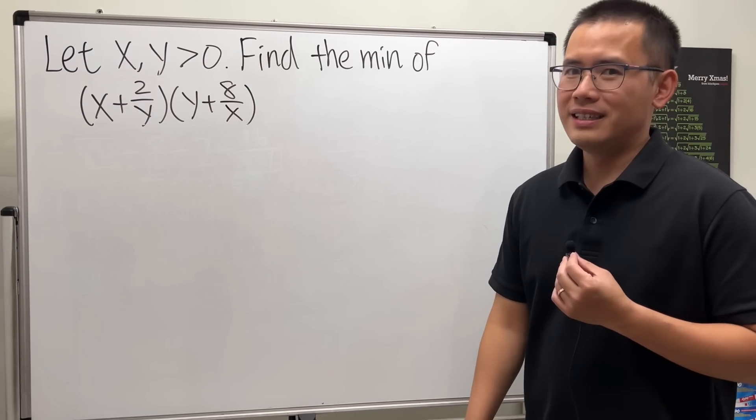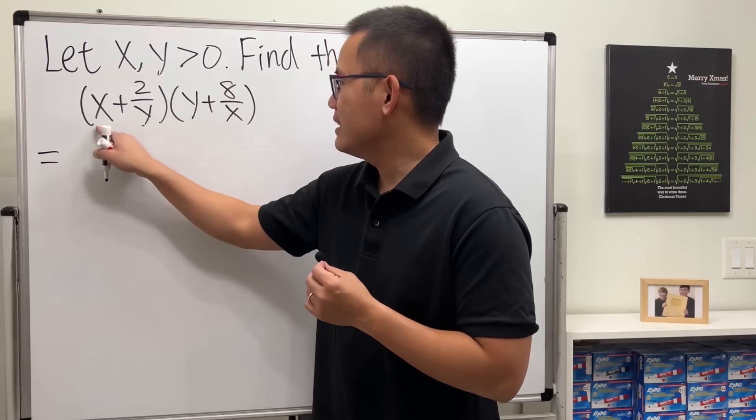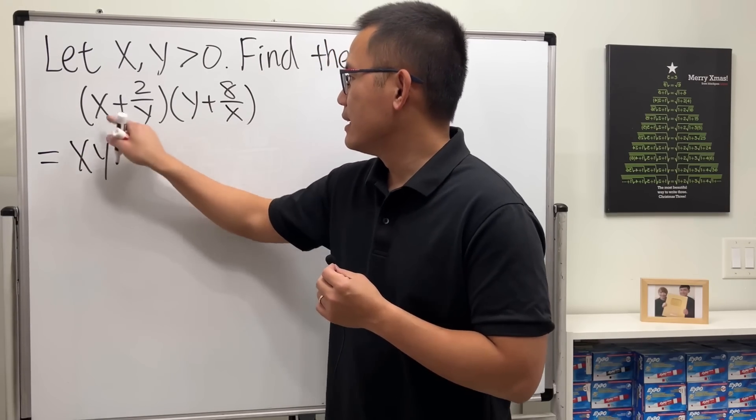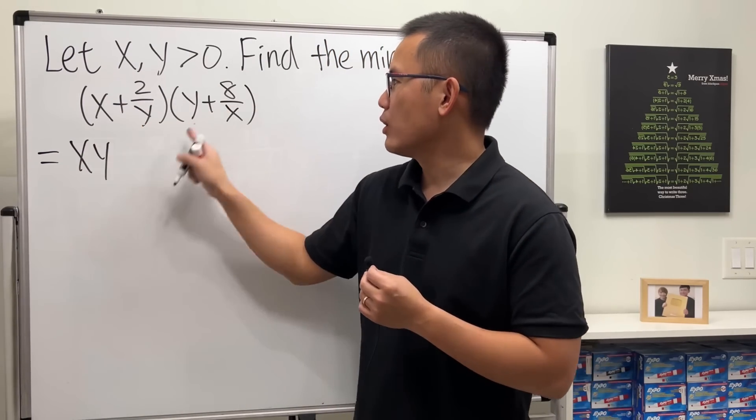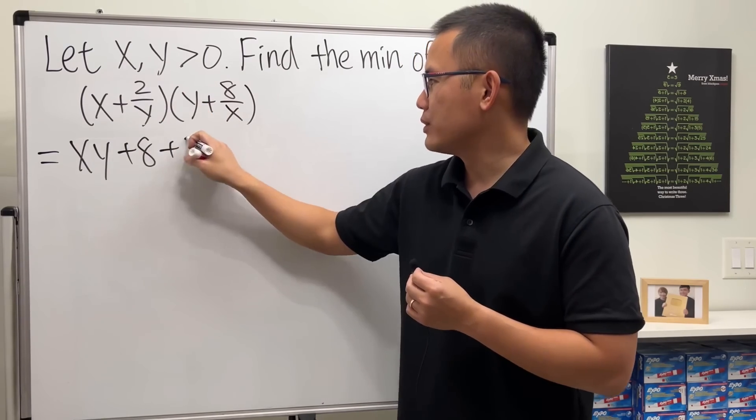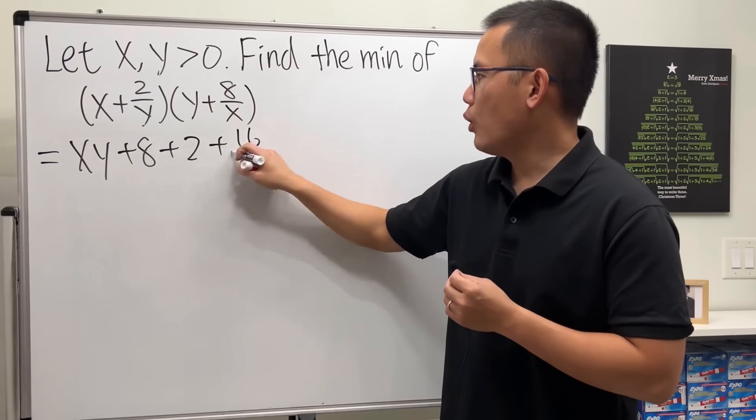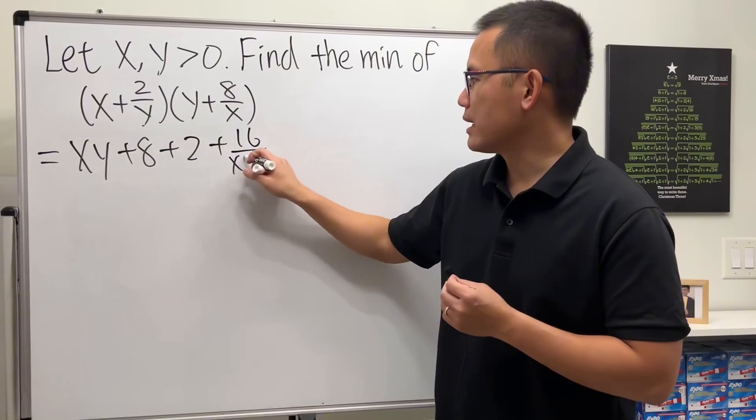So first, let's just multiply and see what happens. When we do that, this times this is xy, this times that—the x cancels—is plus 8, this times this—y cancels—so we have 2, and this times this we have 16 over xy on the bottom.